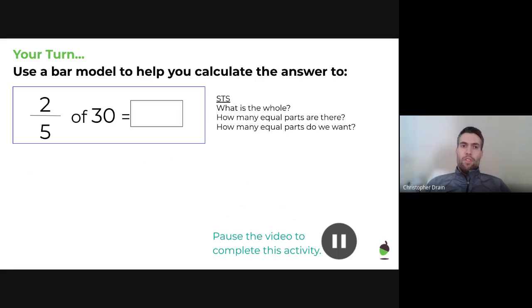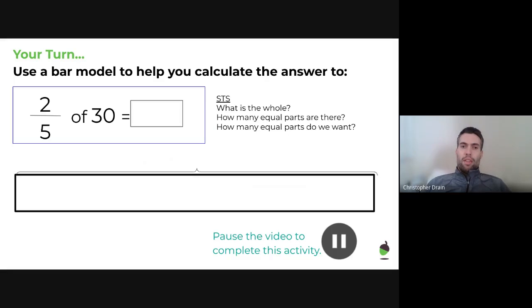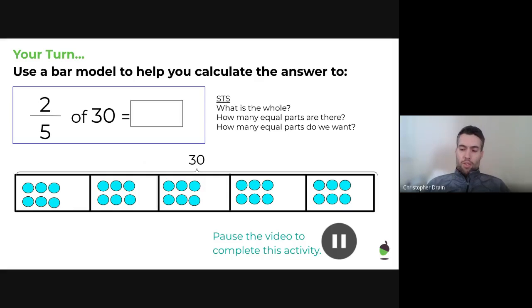Okay, your turn. Pause the video here and try and find two fifths of 30. Excellent. How did you get on with that? If I draw my bar model then, this time it has to represent 30. So, you would have to then split the 30 into five equal pieces because we're trying to find two fifths. Each part is therefore going to be worth one fifth. And we have to distribute the 30 evenly between the sections. There we go. So, quite clearly, we can see that each section has six dots in it. If we want two fifths, that's going to be two of those sections. So, we're going to put a circle around there, and six add six will be 12. Or, two times six, or six times two equals 12 as well.